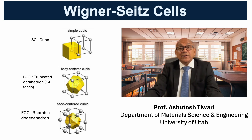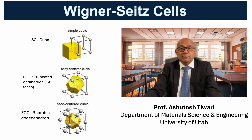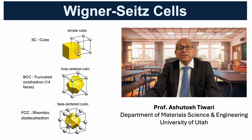In the face-centered cubic lattice, the Wigner-Seitz cell transforms into a rhombic dodecahedron with 12 rhombic faces, corresponding to its close-packed nature. The hexagonal close-packed system yields a hexagonal prism, showing its 6-fold symmetry. As we move to less symmetric systems like tetragonal, orthorhombic, monoclinic, and triclinic, the Wigner-Seitz cell deforms into progressively more irregular polyhedra.